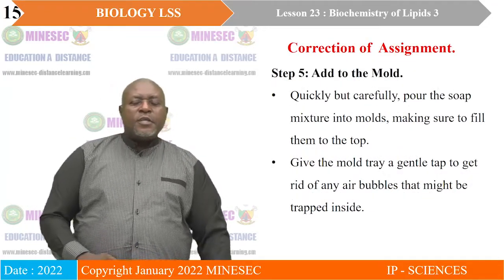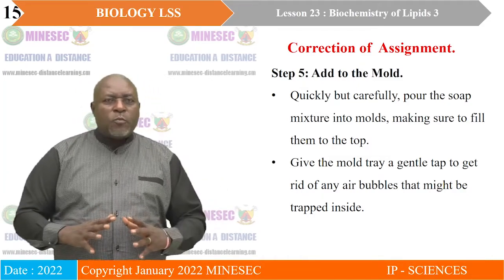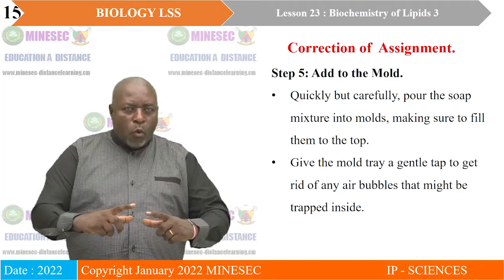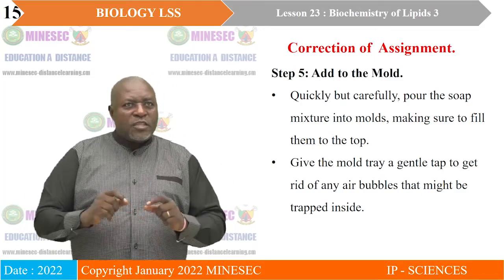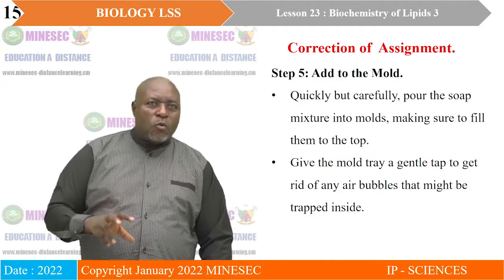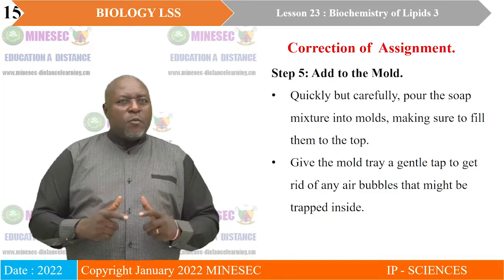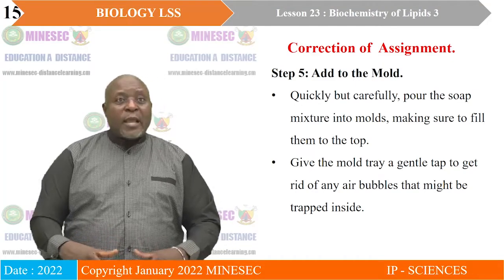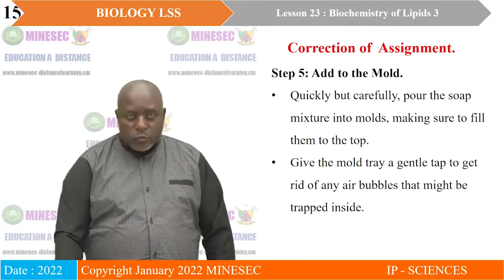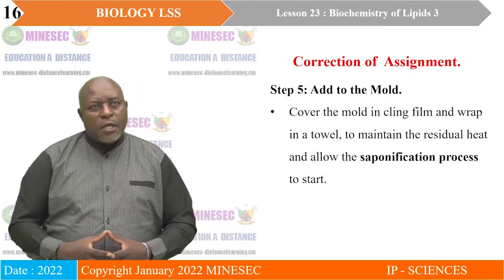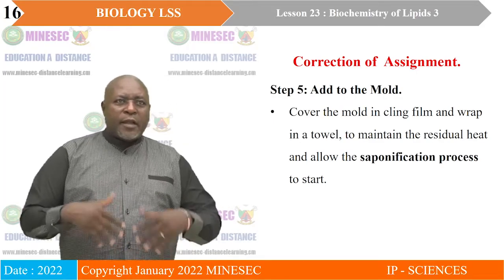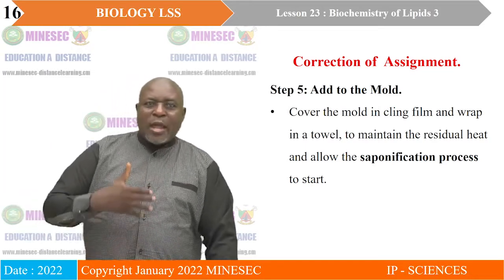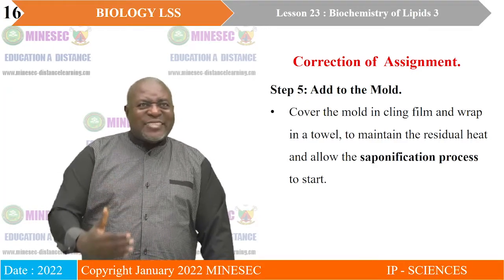Step five: pour the soap into the mold. Remember, one reason you make homemade soap is to get the shape you like, so you may have made a mold to the size and shape you want. Pour the soap into the mold, making sure to fill it to the top. Give the mold tray a gentle tap to get rid of any trapped air bubbles. Then cover the mold with a film, wrap it with a towel to maintain residual heat, and allow the saponification process to start.